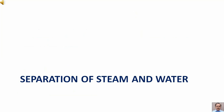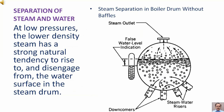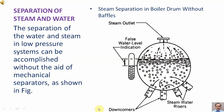Separation of steam and water. At low pressures, the lower density steam has a strong natural tendency to rise and disengage from the water surface in the steam drum. The separation of water and steam in low pressure systems can be accomplished without the aid of mechanical separators, as shown in the figure.